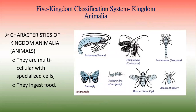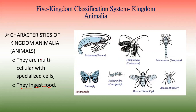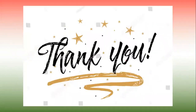Kingdom Animalia — the animal kingdom — is the last kingdom covered today. They are multicellular with specialized cells, and they ingest their food. This kingdom includes not only familiar vertebrates but also prawns, crayfish, cockroaches, scorpions, and house flies — all of those organisms are animals. That's it for today. Thank you very much. I hope this presentation has been beneficial to you.